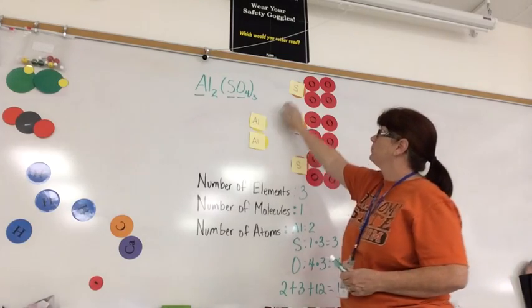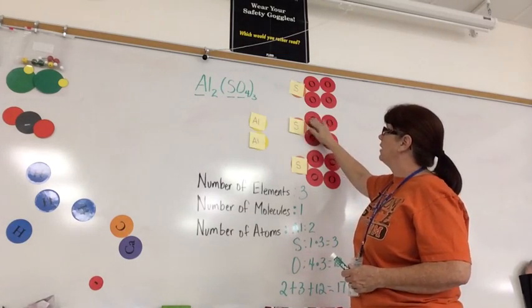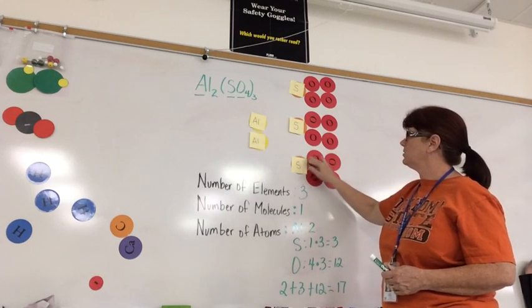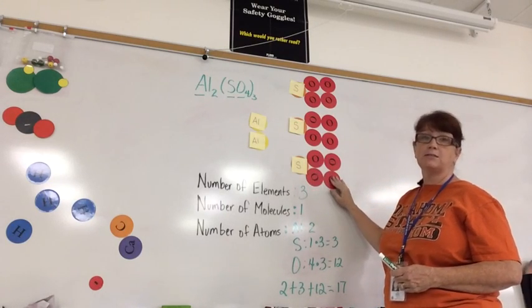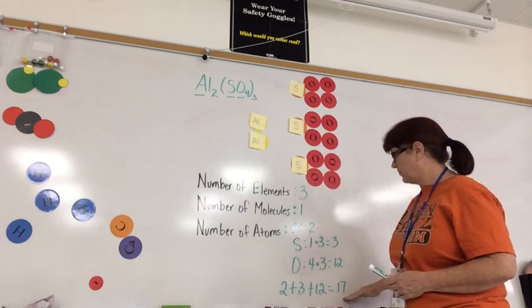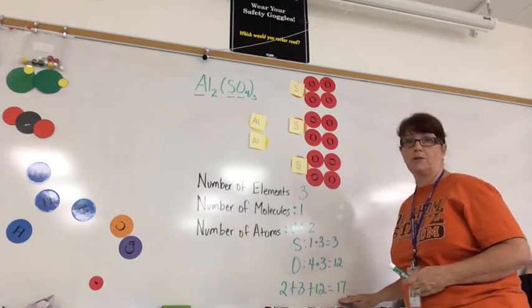Counting: 1, 2, 3, 4, 5, 6, 7, 8, 9, 10, 11, 12, 13, 14, 15, 16, and 17. So 17 is what we got.